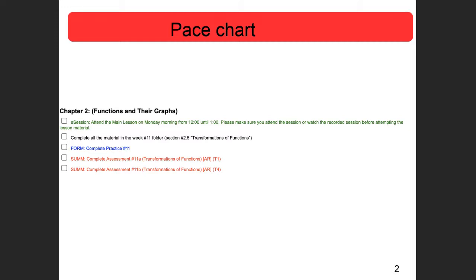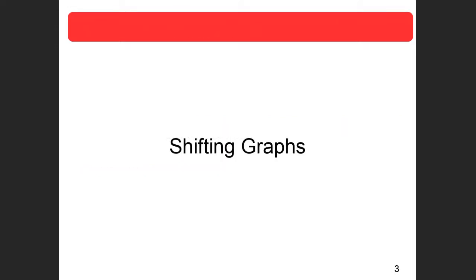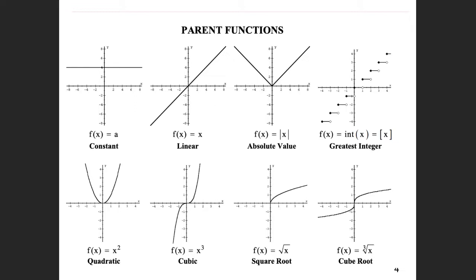The first thing we're going to talk about today is shifting graphs. First, I really want to talk about the parent functions, because if you don't know what they are, there's no way to graph or do all the transformations on them. The first one is absolute value. You really need to know the absolute value graph. It starts at the origin in a V shape — slope is one on one side and negative one on the other. It's called the parent function because it's the simplest absolute value function there is.